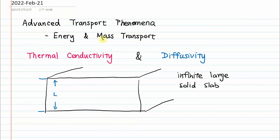We define the coordinates so that the bottom is y equals zero and the top is y equals L, giving the slab a thickness of L. We say the slab is originally at an equilibrium condition, meaning the temperature throughout the slab is initially constant and set at T₀.